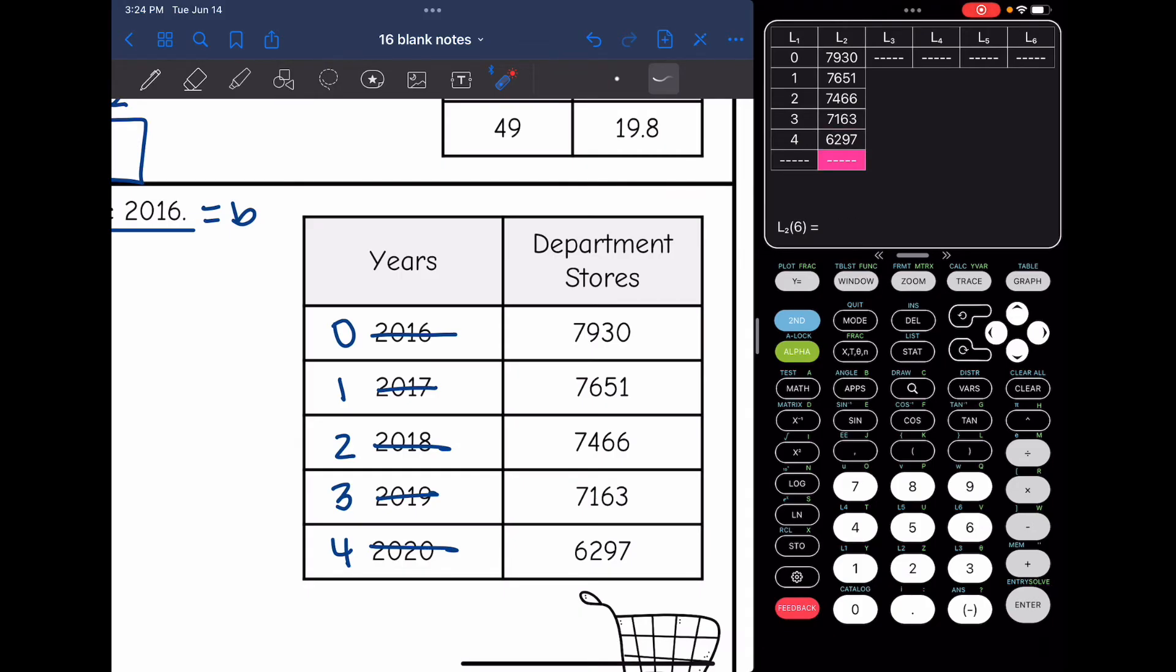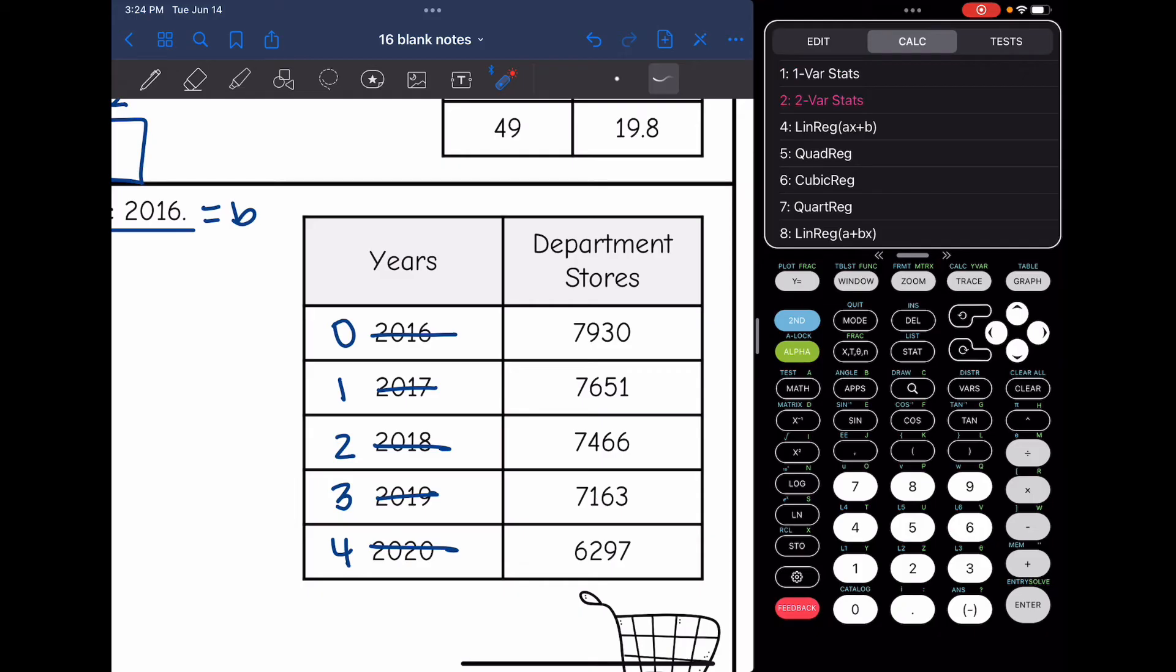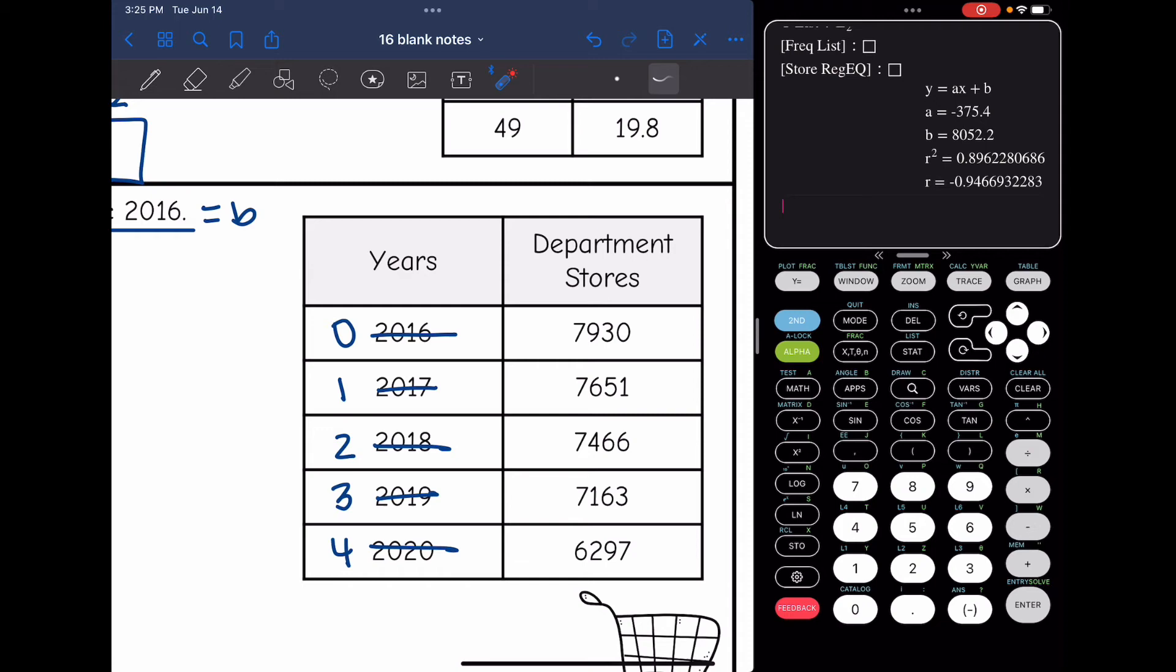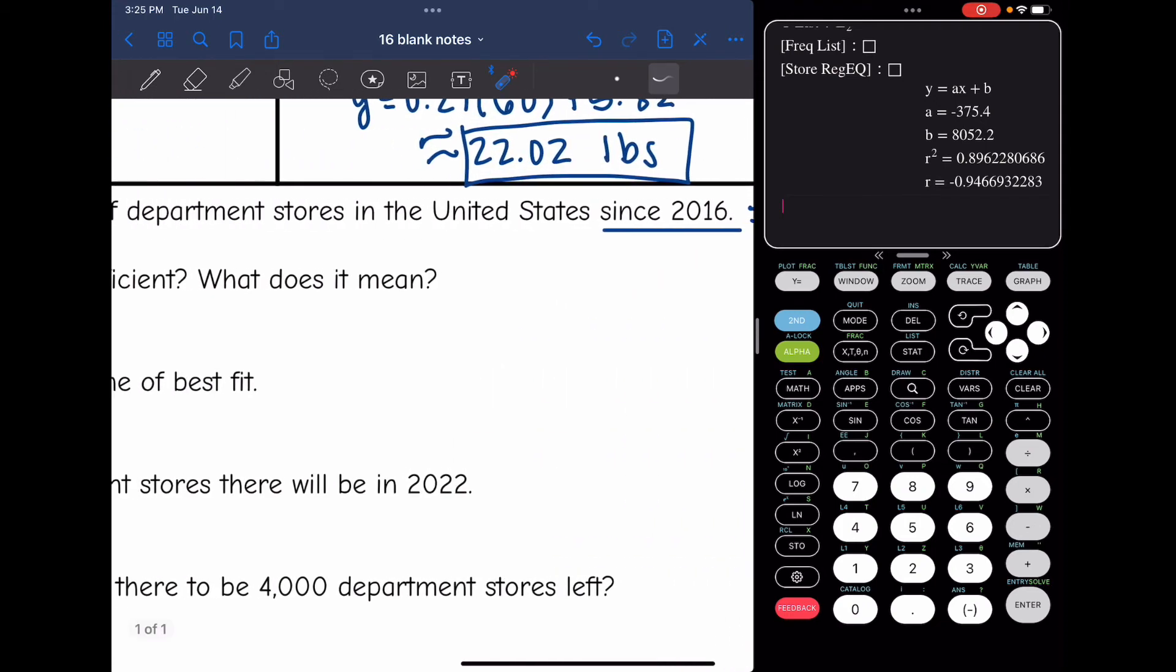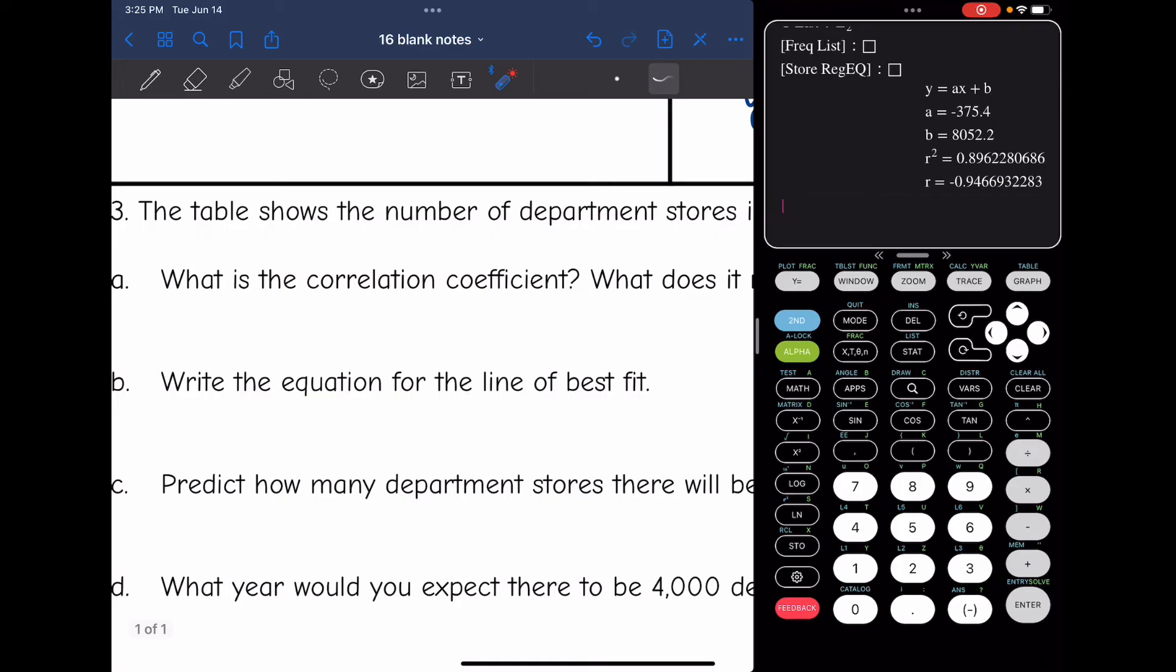Then to get the information on it to find all the linear regression information, we go stat, arrow over to calc, and then down to 4, and then hit enter. So there's the slope, y-intercept, and then the r-value is negative 0.947.